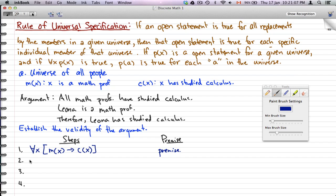Leona is a math prof, so we're going to use l to represent Leona. So m(l), let's plug in l for Leona, l is a math prof, Leona is a math prof. That's another premise, that's given.